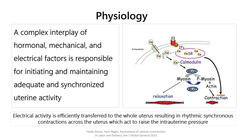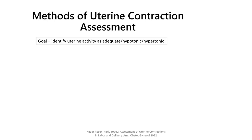Electrical activity is then efficiently transferred to the whole uterus, resulting in rhythmic, synchronous contractions across the uterus, which act to raise the intrauterine pressure. There are a few methods for monitoring uterine activity that are in clinical use, and each method is associated with advantages and disadvantages.